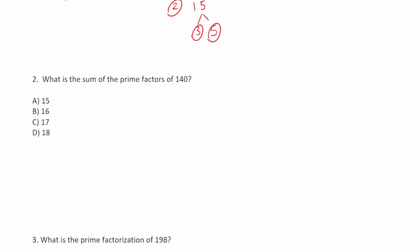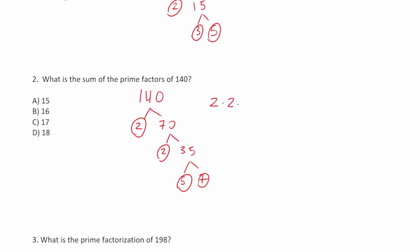Number 2 says: what is the sum of the prime factors of 140? First, we find the prime factorization of 140. The two factors of 140 are 2 and 70. Let's break down 70 further: 70 is 2 and 35, and 35 is 5 times 7. So the prime factors of 140 are 2, 2, 5, and 7, giving a prime factorization of 2 times 2 times 5 times 7. But the question asks for the sum: 7 plus 5 plus 2 plus 2. That equals 16. So the sum of the prime factors of 140 is 16 — answer B.